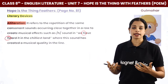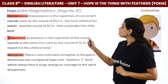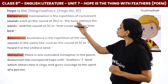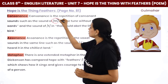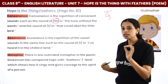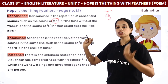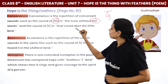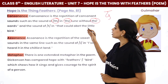The next is consonance. Consonance is the repetition of consonant sounds, such as in 'the tune without the words' — here the 'th' sound repeats. It is not necessarily at the start of a word; it can appear in the middle too. For example, in 'tune, without, words' the consonant sounds repeat. Similarly, 'that could abash the little bird' — again the 'th' sound repeats. This is consonance.